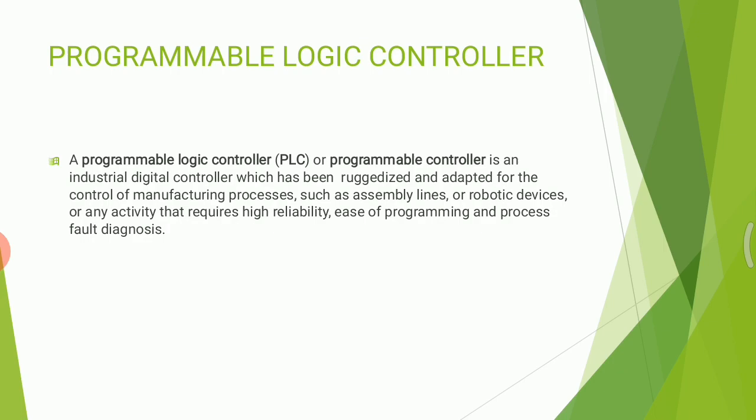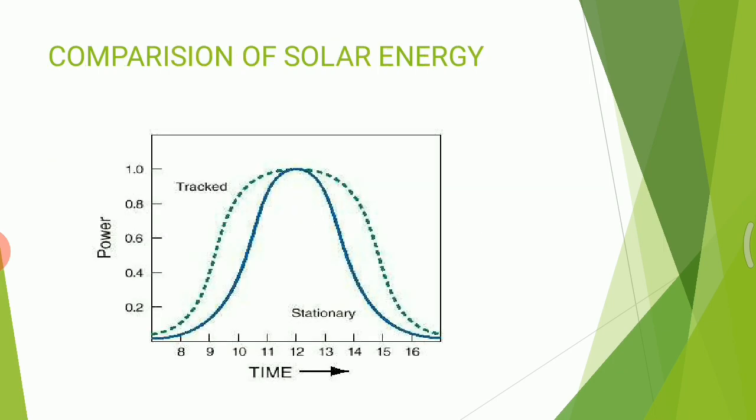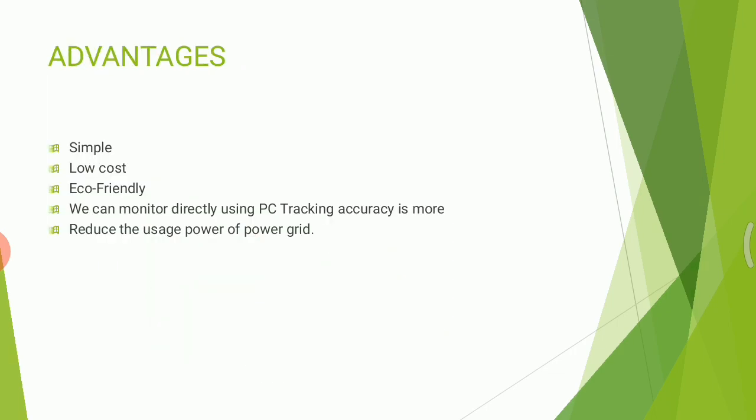A comparison of solar energy with and without a tracker shows that a stationary panel without a tracker has low efficiency, while a panel with a tracker performs better. Advantages include: simple construction, low cost, eco-friendly, direct monitoring using PC tracking, and reduced usage of power grid.